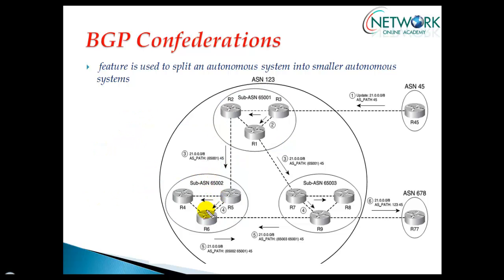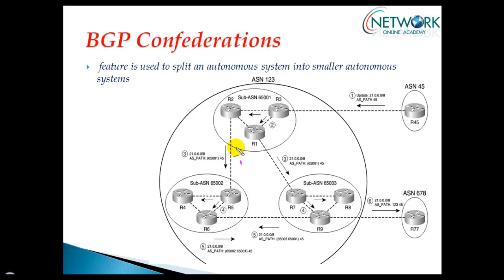Like normal EBGP, when an update is sent by this router to an internal router, it will not change the next hop — I have to change it manually. Inside the confederations it is more like normal EBGP only. It removes the confederations AS information when the update goes outside the confederations AS.